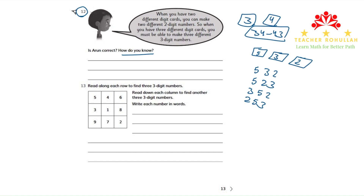We can even make more than three. So we can say yes, he is correct. He says you must be able to make three different three-digit numbers — I can say he is correct, because we can even make more than three different three-digit numbers.